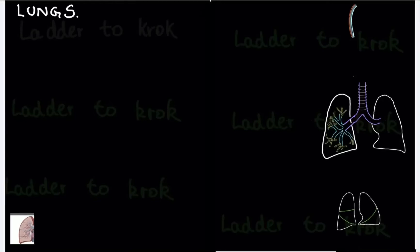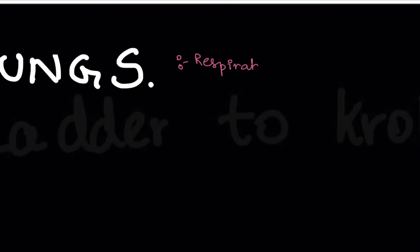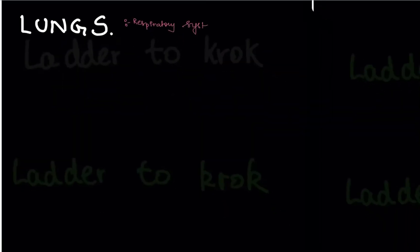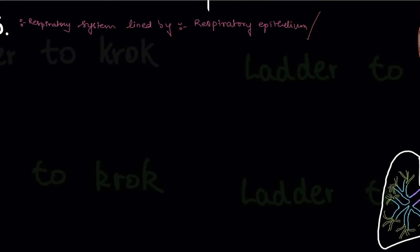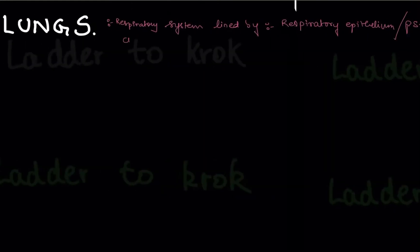Hello guys, welcome back. Let's start with a new topic: lungs. Lungs are a part of the respiratory system. The whole respiratory system, starting from your nose till the end, is lined by an epithelium known as respiratory epithelium. This respiratory epithelium is pseudo stratified ciliated columnar epithelium. You have to remember this epithelium as it is asked many times.